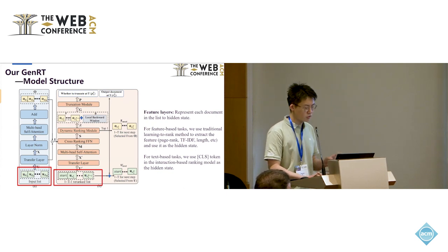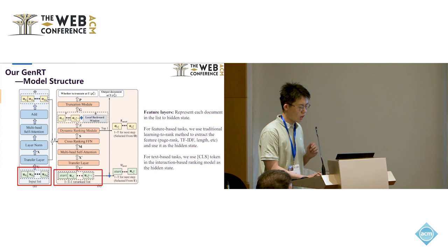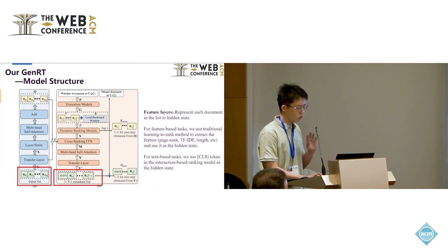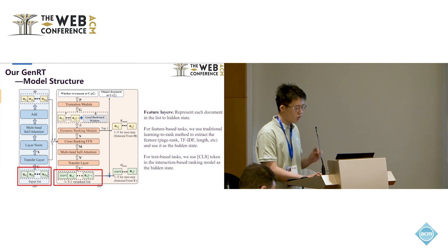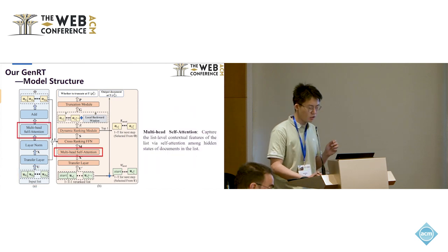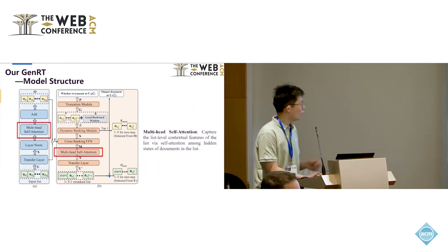Now, we start to introduce a specific model structure of our JRT. Firstly, the feature layers of JRT represent each document in the list to hidden states. For the feature-based tasks, we use a traditional learning-to-rank method to extract the feature such as PageRank, TF-IDF, and lengths, and use it as a hidden state for the document. For the text-based tasks such as open domain question answering, we use CLS token in the interaction-based ranking model as the hidden states.